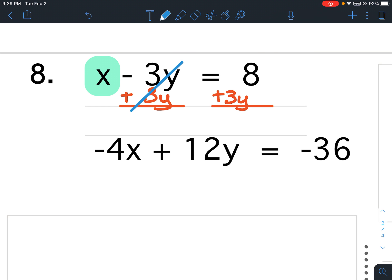They would cancel. Bring down the x equals. These are not like terms, so I bring down the 3y and I bring down the positive 8.